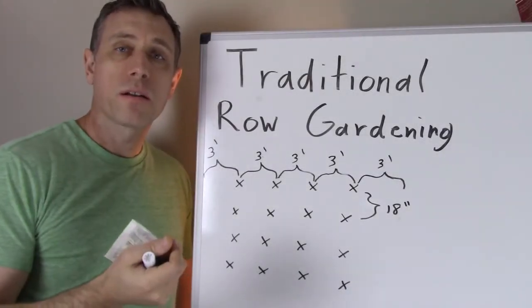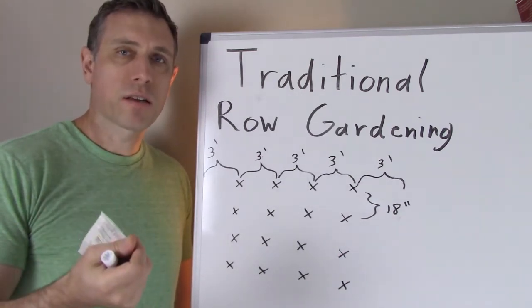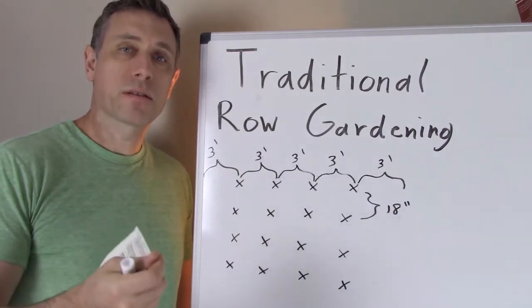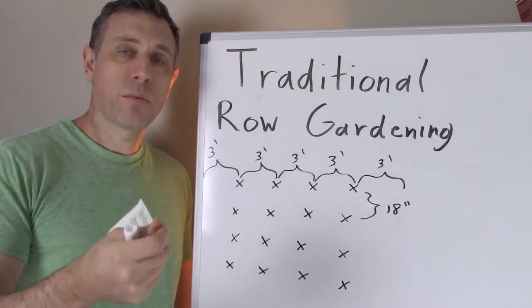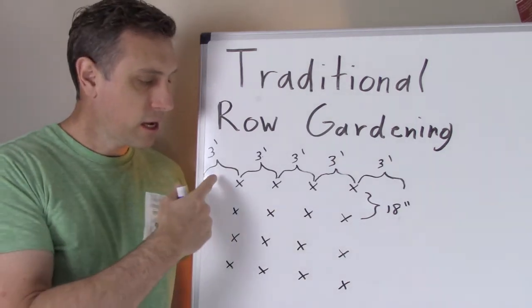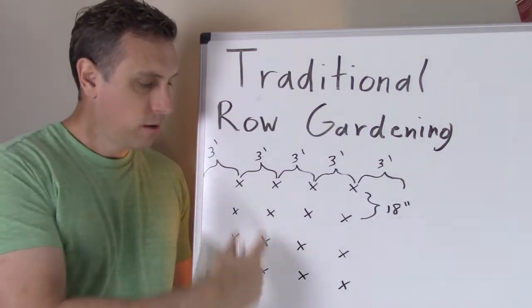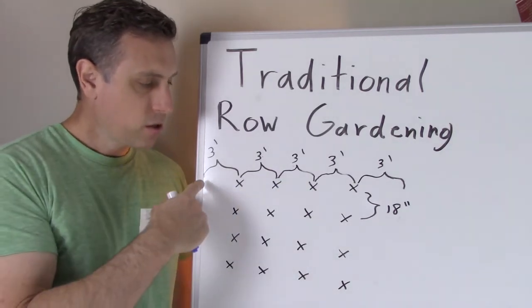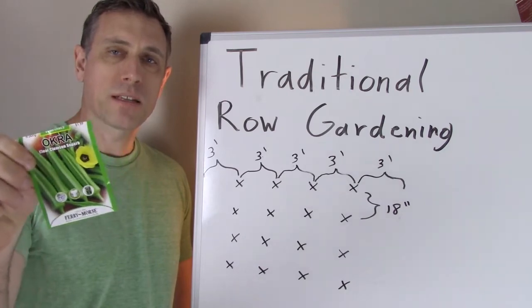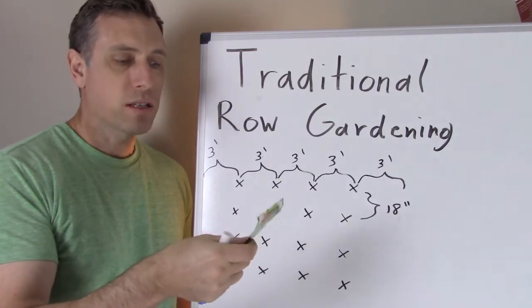So the first type of garden we're going to talk about is called traditional row gardening. Traditional row gardening has been around since gardening has been around. In this you're going to take your existing soil, you're going to till it up and add amendments like minerals, maybe some compost, and you're going to use that existing soil to grow your vegetables. Now the layout of it is usually you're going to have large walking paths in between rows of vegetables. For example, all the vegetable seeds that you buy at the store are going to have traditional row gardening instructions on them as far as spacing.